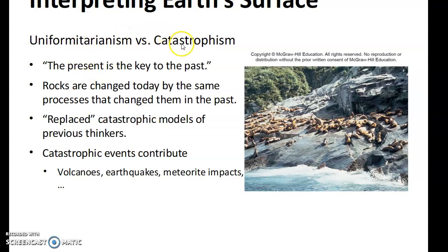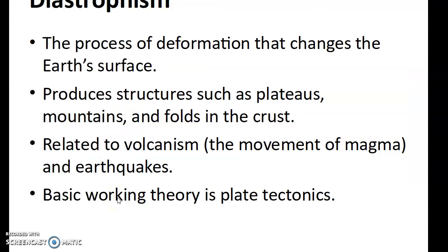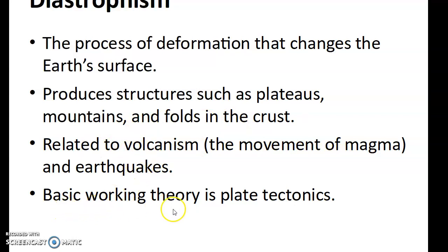There is a divergence in terms of explanations for how this happens. What we know is that certain things do take place today — both rapid catastrophic events as well as things that happen at a slower extent. Diastrophism is the process of deformation that changes the Earth's surface, producing structures such as plateaus, mountains, and folds in the crust. It's related to volcanism and earthquakes, and is the basic working theory for plate tectonics.